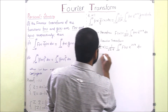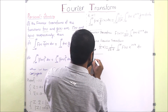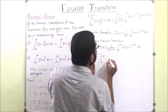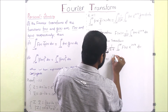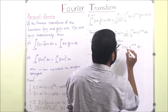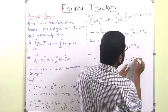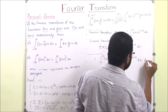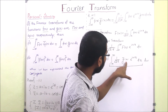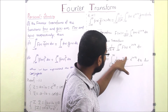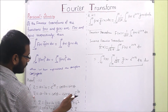Now we change the order of integration. Bringing F(w) to the outer integral, we get: integration from minus infinity to infinity of F(w) times the inner integral — 1 over square root of 2π, times the integration from minus infinity to infinity of g-bar(x) e to the power iwx dx — then dw. We now concentrate on this inner integral. Recalling that for a complex number z equal to e to the power i-theta, its conjugate z-bar equals e to the power minus i-theta, the sign of the exponent flips when taking the conjugate.